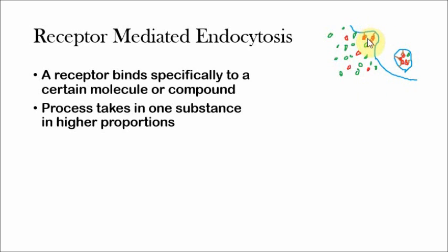Essentially, these receptors will be located in a certain area, and they'll bind to these molecules or compounds, which are called ligands when they're binding. And then the same process will occur where the vesicle will pinch off. And now you have a vesicle, but it has more of the red molecule than the green molecule. So that's really all that's different. Bulk transport is as simple as that.